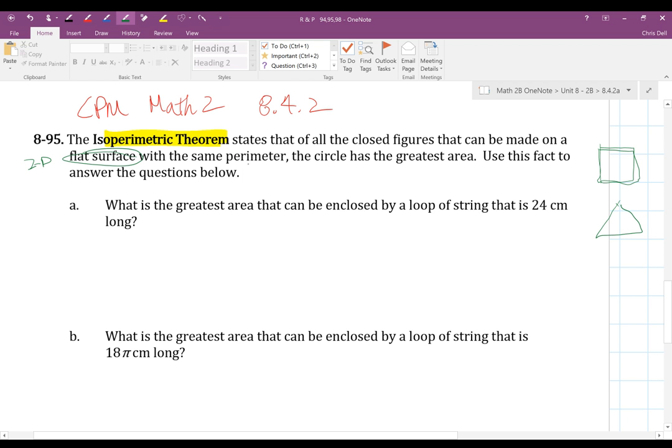If I had the same piece of string making each of these shapes, it says that the circle is the one with the greatest area. So if I had that same length, each of these perimeters were all the same, then I took that perimeter and wrapped it around as a circle, that would have the greatest area. That's what that's saying. So let's answer the question.